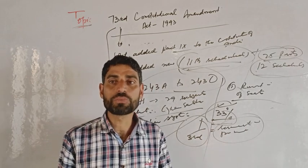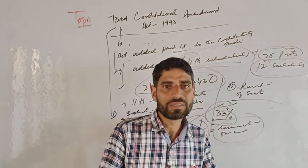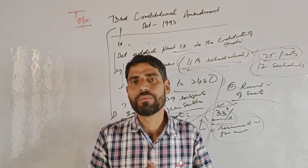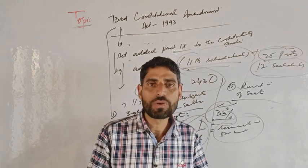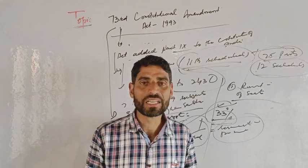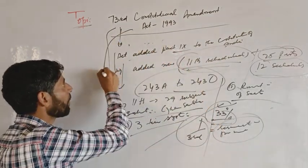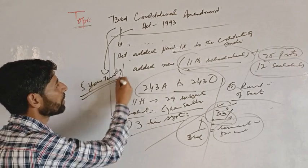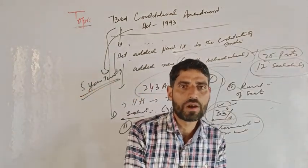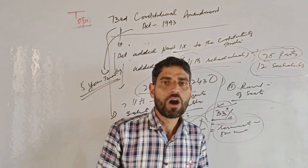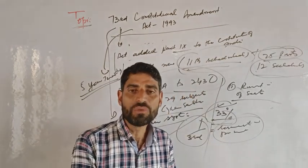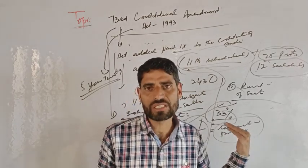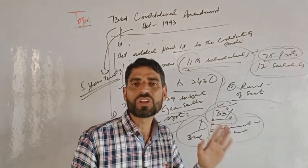One-third of the total number of seats reserved for women — including those reserved for women belonging to Scheduled Castes and Scheduled Tribes — are also covered. Regarding duration, the 73rd Constitutional Amendment Act provided a five-year term for panchayats at every level.